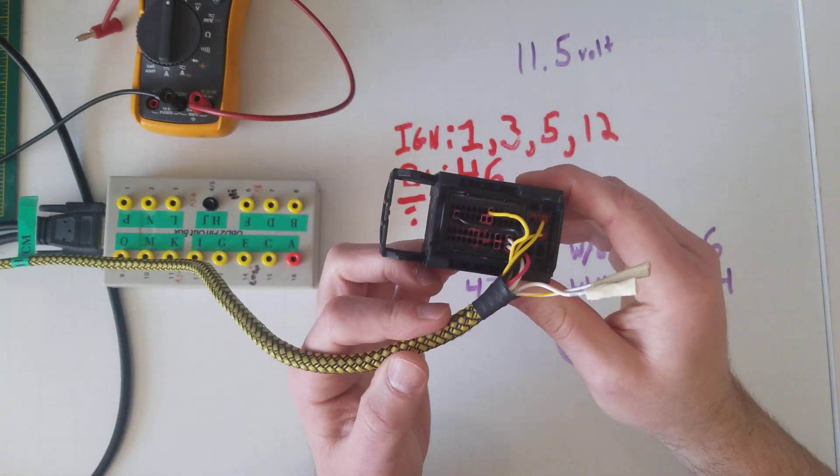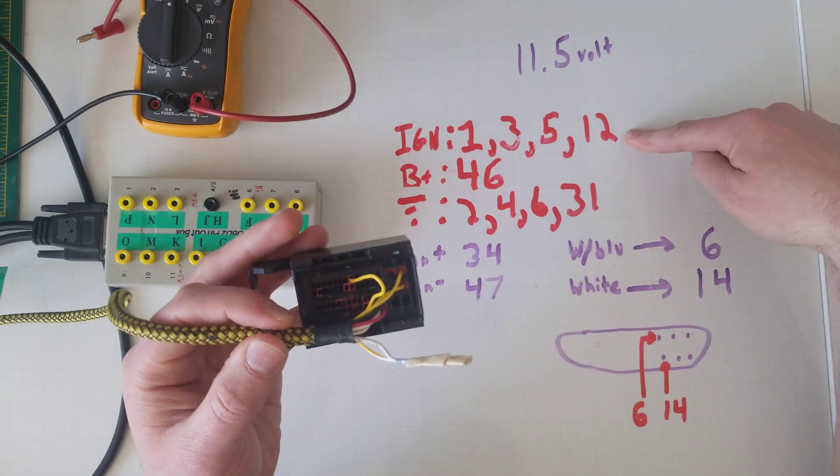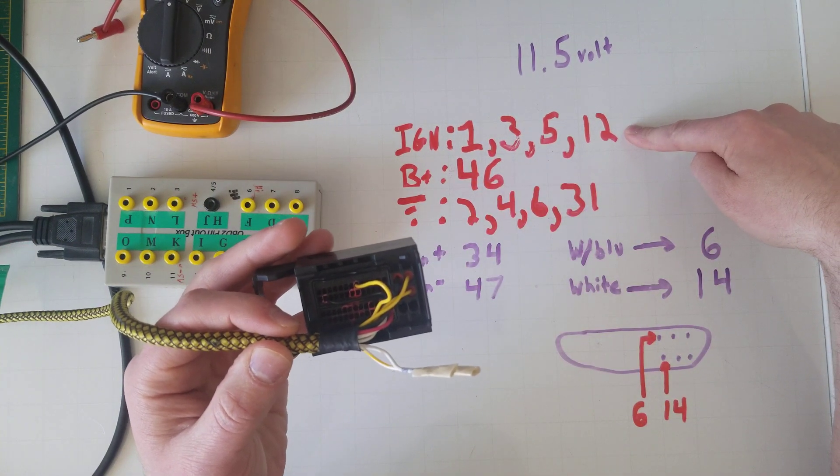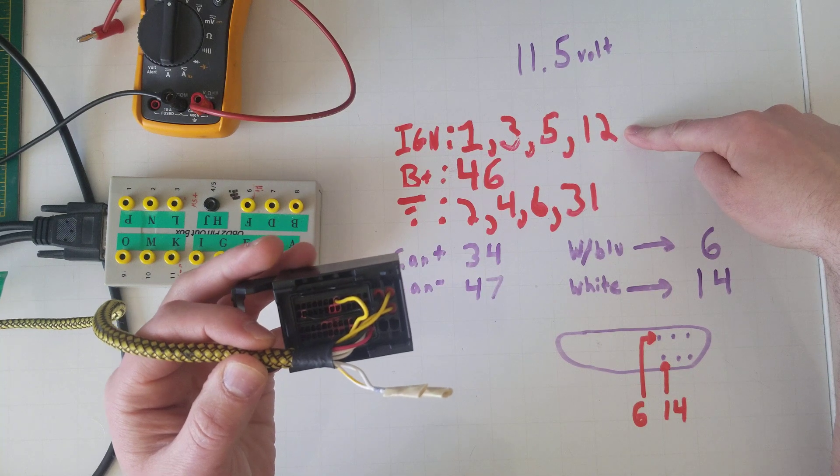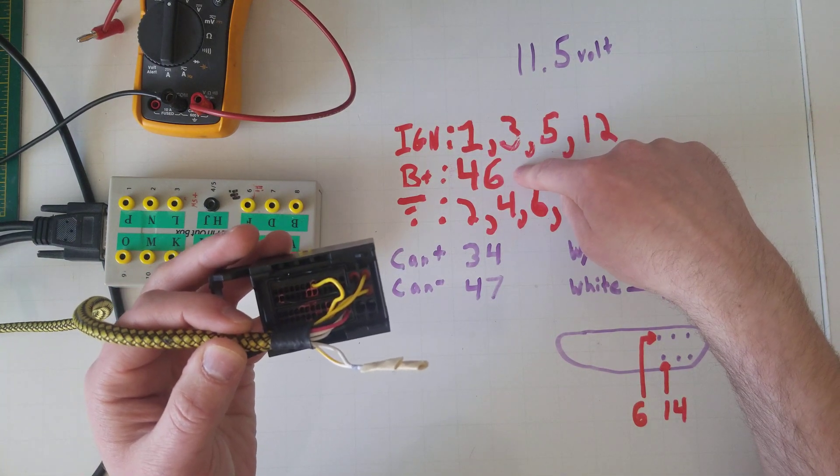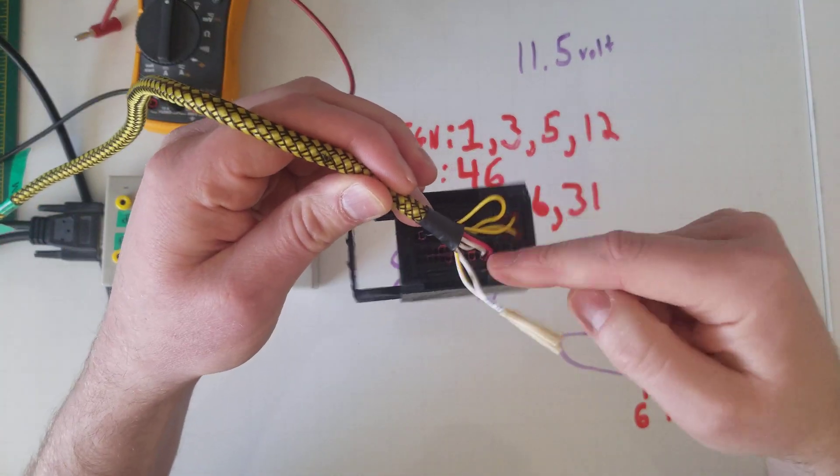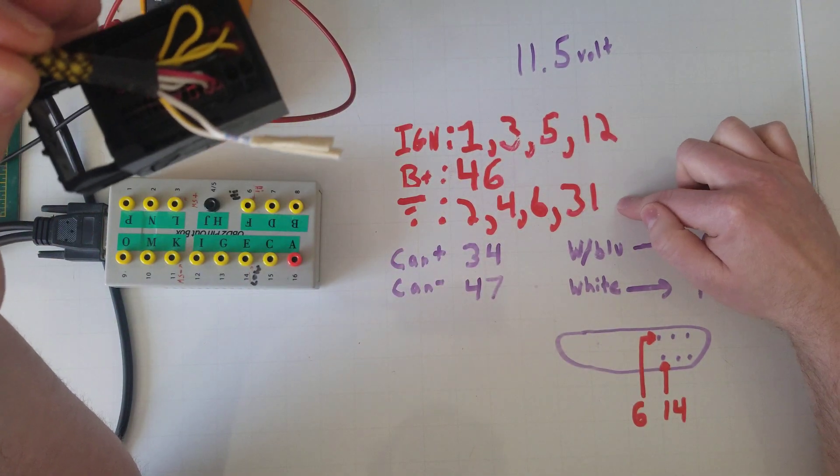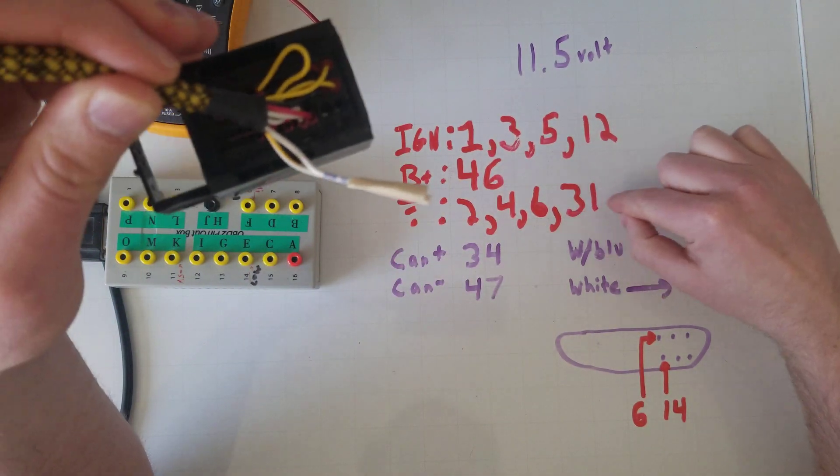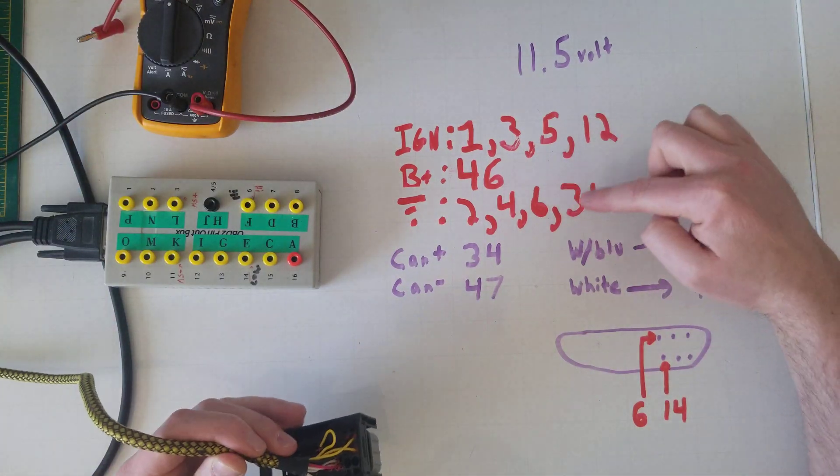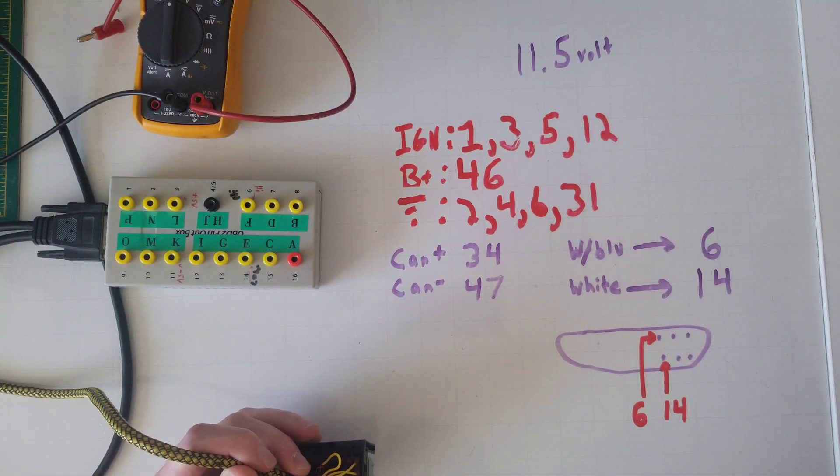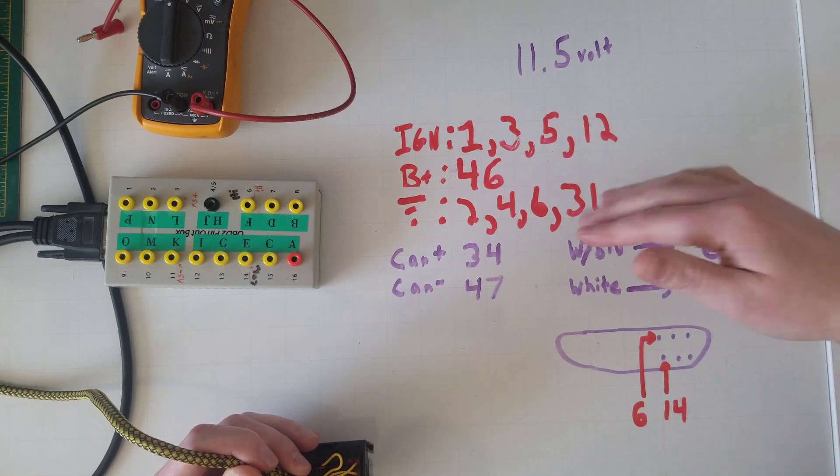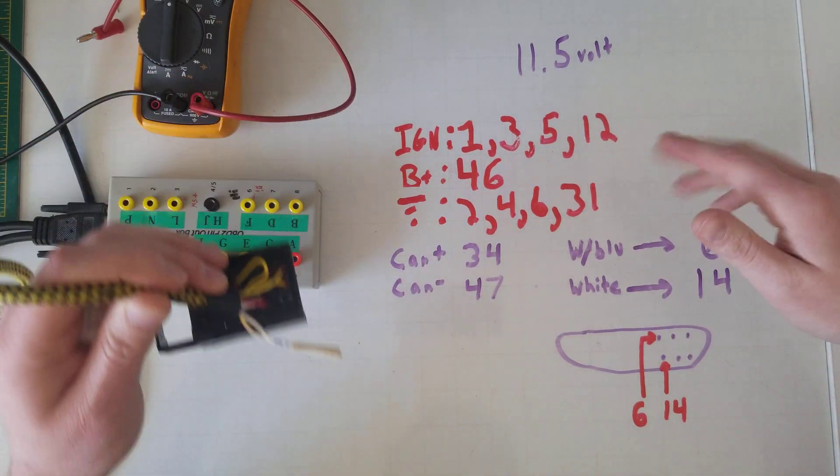So if you can pause and zoom in on my connector, Kion pins 1, 3, 5, and 12 are all gonna have battery voltage with the key turned on. Pin 46 is the red one on my connector, hot at all times. And these are the grounds. I actually don't think 31 matters, I think it's for the power takeoff.